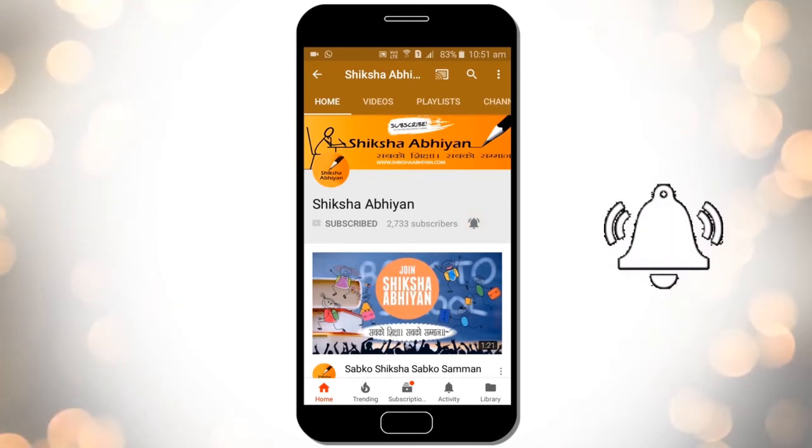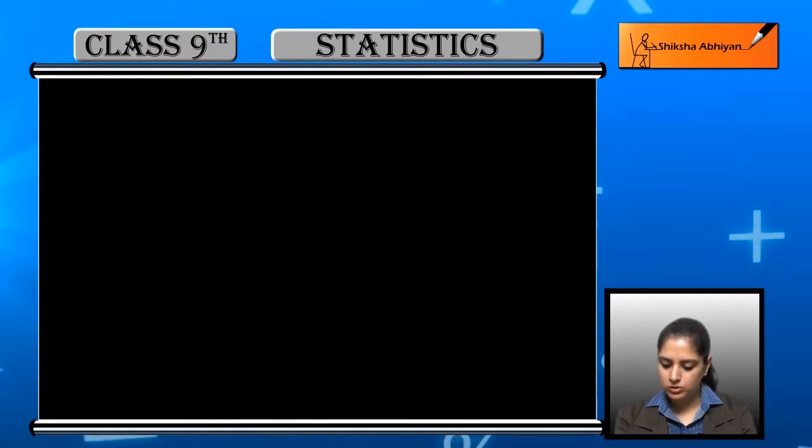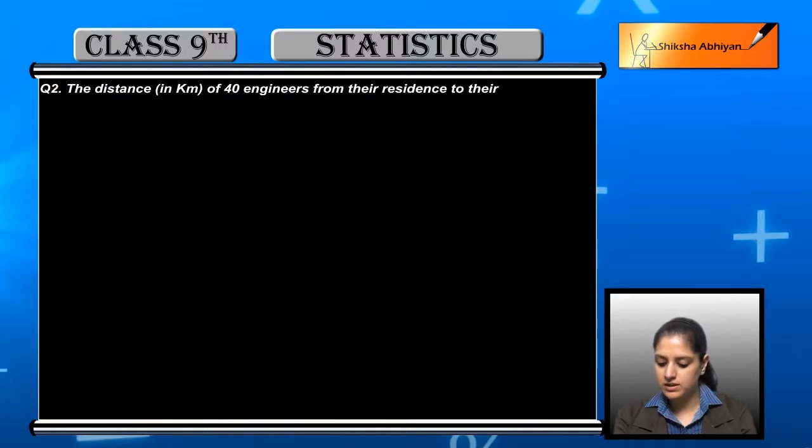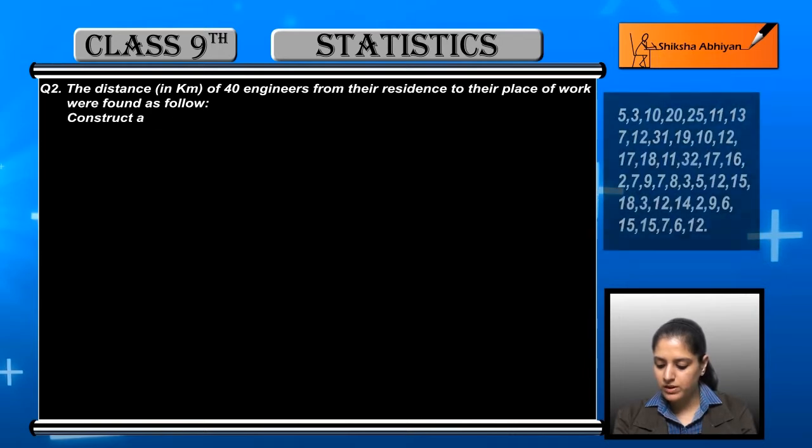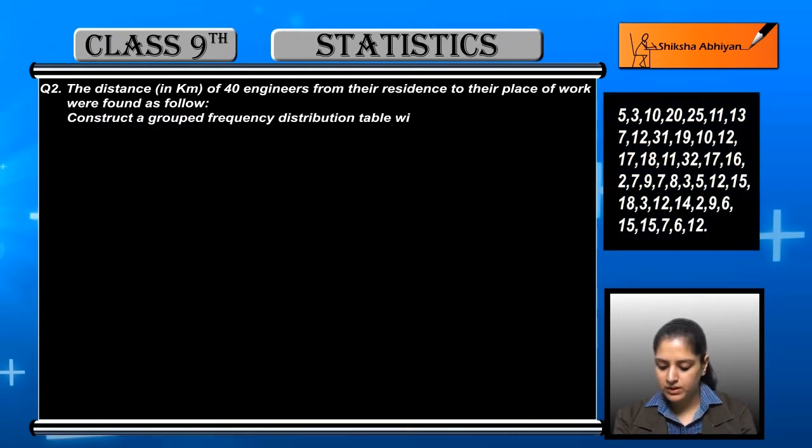Question number two: The distance in kilometers of 40 engineers from their residence to their place of work were found as follows. Data was collected on how far engineers live from their workplace - distance data from 40 engineers was collected.